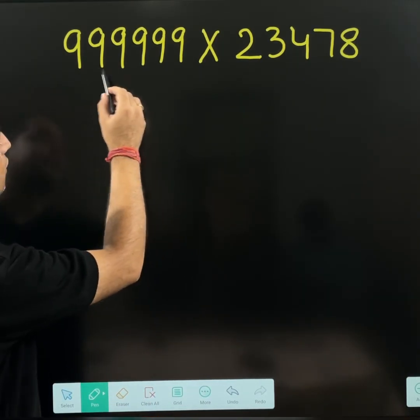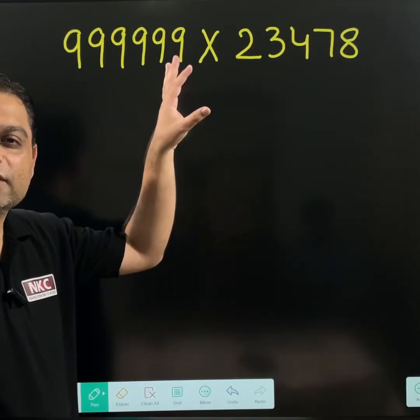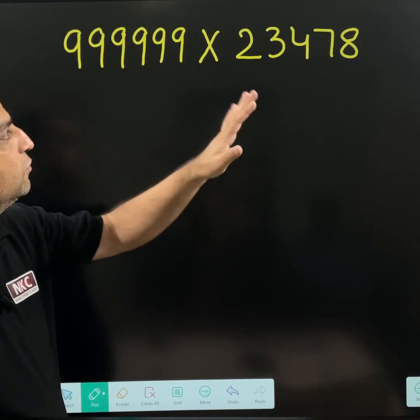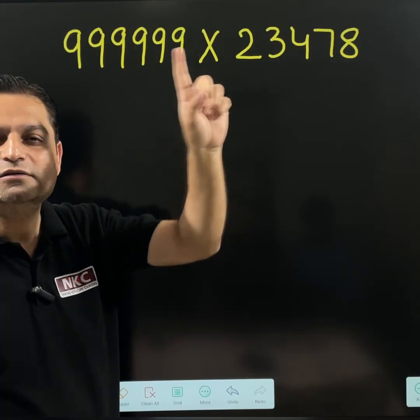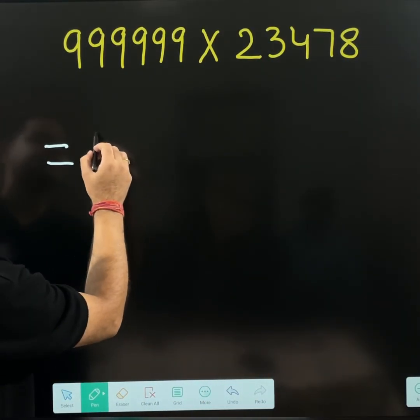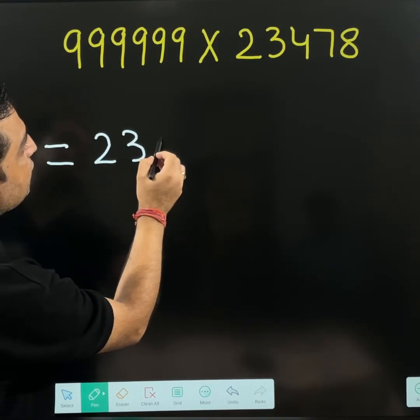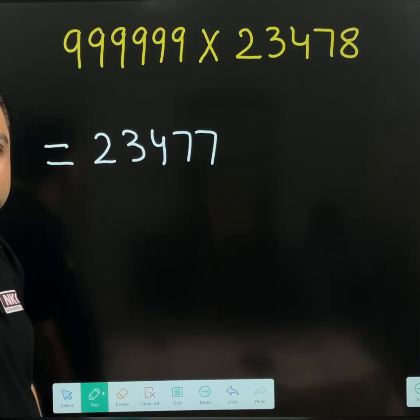I am taking now the upper question which we already written. Looking at the question, we started the video. Let's come to that. It is 23478. Just one lesser than that. Directly let us write the answer. One lesser than that is 23477. One number lesser than that.